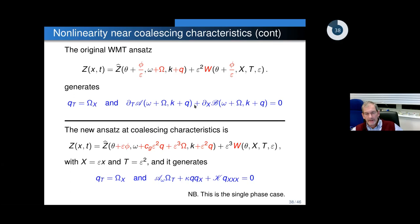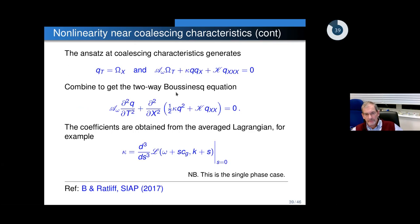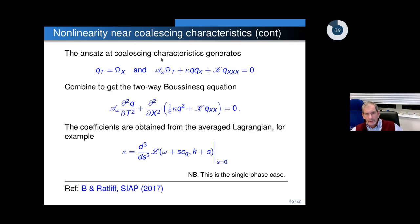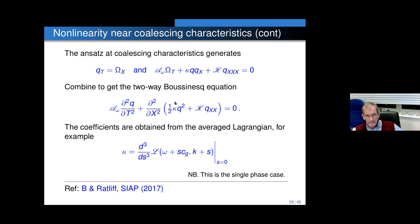Let me show what I mean by remodulation. The original Whitham modulation theory ansatz has geometric optic scaling and generates a non-linear equation. If I introduced a new scaling — an epsilon-cubed remainder, slower timescale — we generate an equation which looks a little bit like KDV but is mixed. If we have coalescing characteristics in classical one-phase Whitham modulation theory, under remodulation we get a new equation — and if you take two such equations and combine them, you get the two-way Boussinesq equation. The coefficients are obtained from the average Lagrangian. This is work that we did with Dan a couple of years ago.